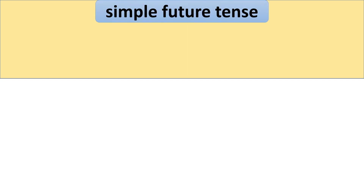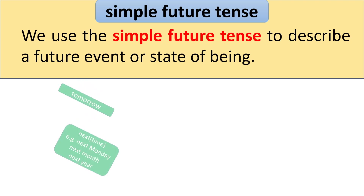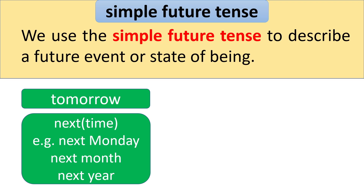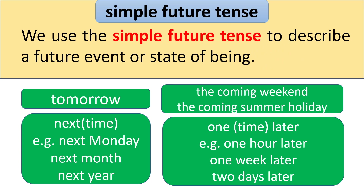Simple Future Tense. We use the simple future tense to describe a future event or state of being. When you find these time words in a sentence — for example, tomorrow, next Monday, next month, next year, the coming weekend, the coming summer holiday, one hour later, one week later, two days later — we need to use the simple future tense.